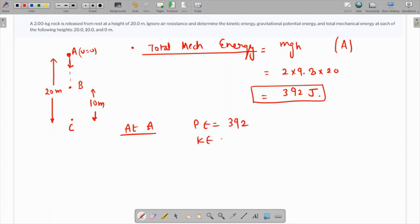At C it is very easy because the potential energy is zero because it is at the level ground and kinetic energy, the whole energy is converted to kinetic energy so that's 392 joules.